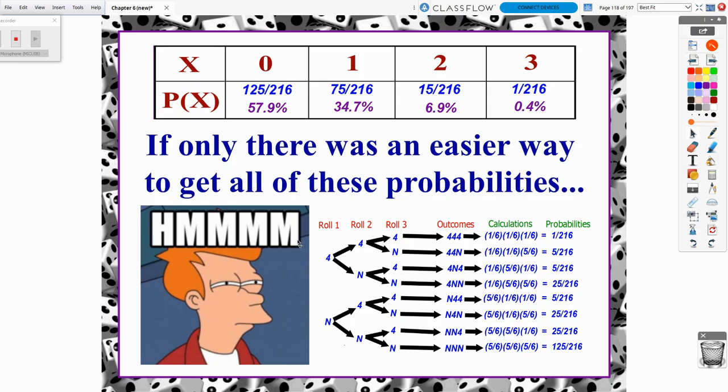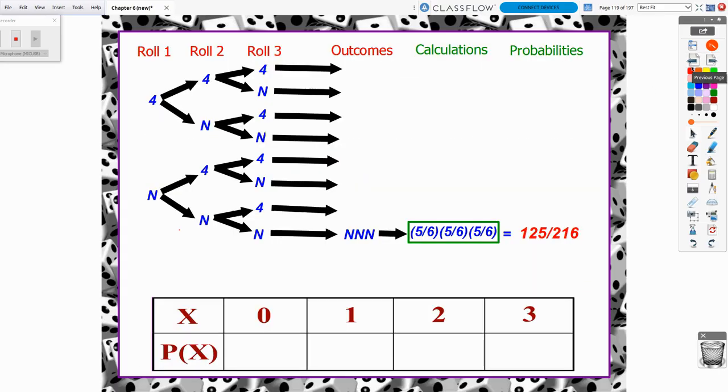And so to figure out the probability distribution, we went through this tree diagram of roll 1 versus roll 2 versus roll 3. And what are all those different outcomes? And what were all those probabilities multiplied? And then we grouped together ones that had common outcomes. And we got all of these probabilities. So what we're really going to focus on in Video 5 is how can we avoid making this tree diagram?